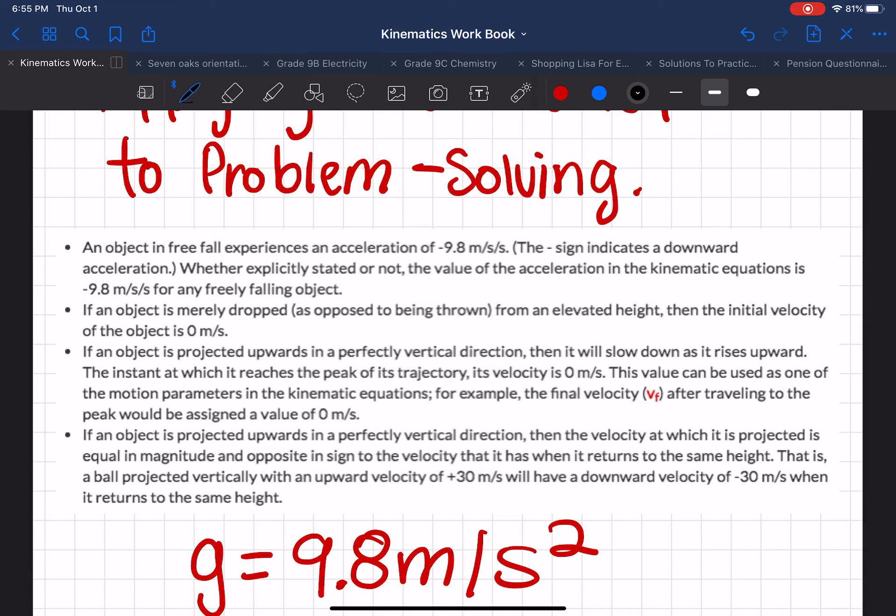If an object is projected upwards in a perfectly vertical direction, then the velocity at which it is projected is equal in magnitude and opposite in sign to the velocity that it has when it returns to the same height. That is, a ball projected vertically with an upward velocity of plus 30 meters per second will have a downward velocity of minus 30 meters per second when it returns to the same height. So it's just the opposite sign, but the same velocity.